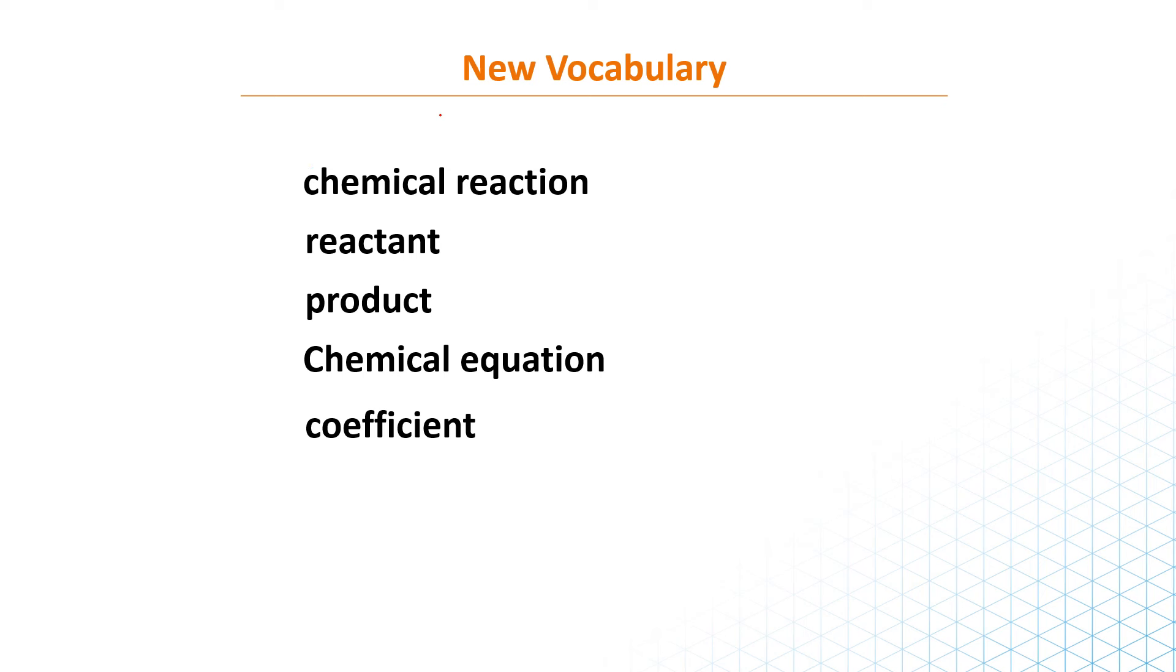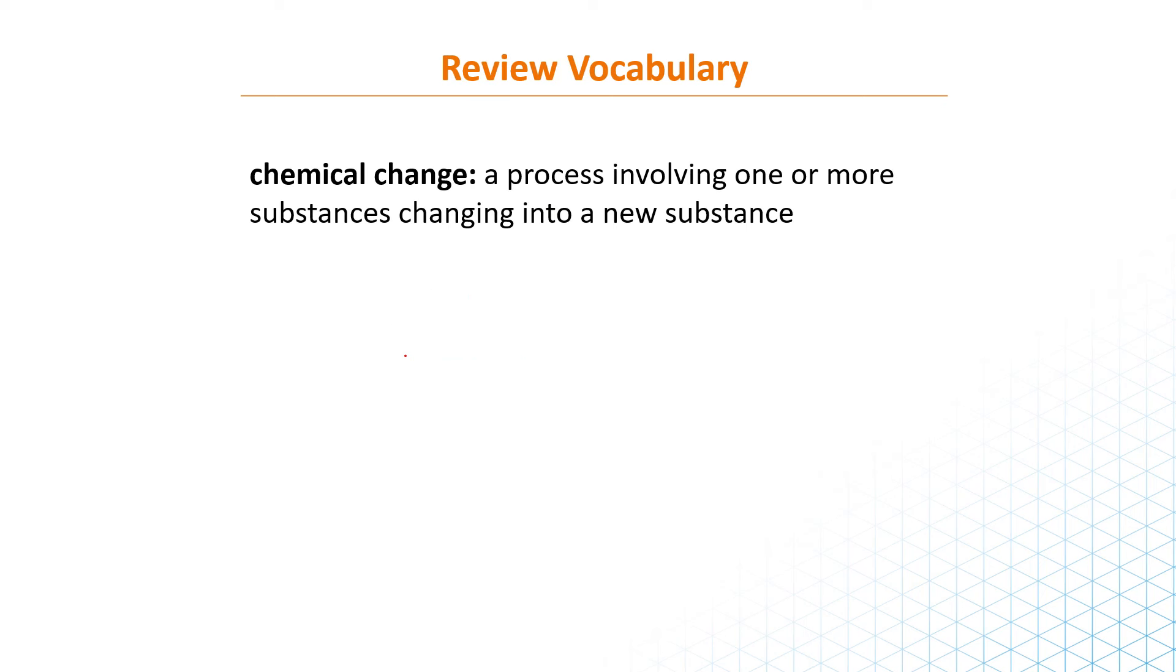So how are chemical reactions modeled? How can we represent or show chemical reactions on paper? Chemical reactions - this is the main idea - are represented by balanced chemical equations. This is very important. We need a balanced chemical equation to represent a chemical reaction. And this is a real world reading link.